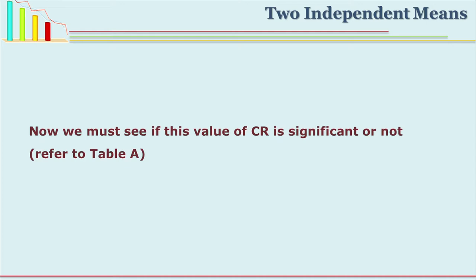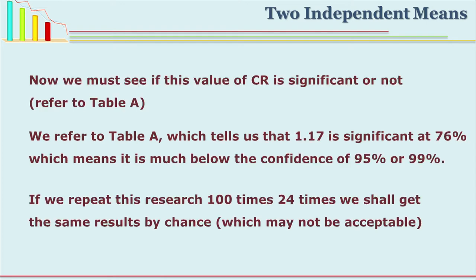To check the critical ratio, we refer to Table A in the statistics book. If you see Table A, you will find that the value 1.17 is significant at only 76%. That means if you conduct such an experiment 100 times, only 76 times will you get this result; the other 24 times you may not. Can you reject this null hypothesis at 95% level? No, and certainly not at 99% level. This can be proved only at 76%, which is not an acceptable level of significance.